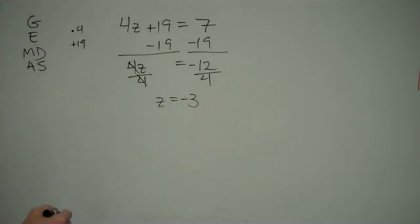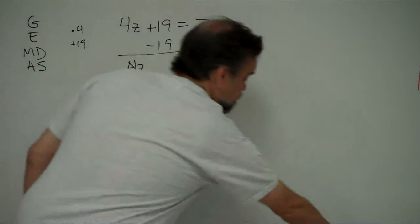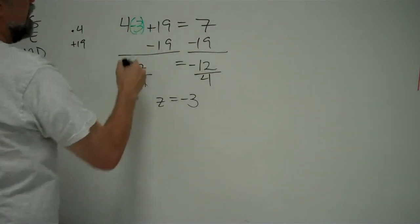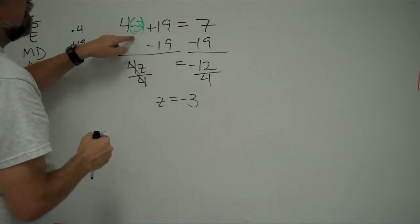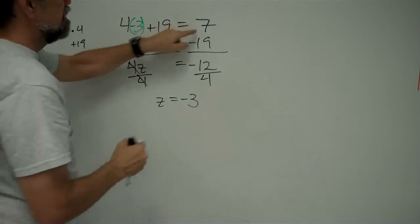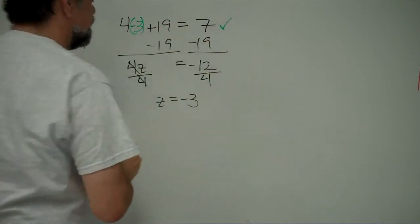Well, let's see. Is that really true? If I were to replace z with negative 3 here, I would get negative 12, and negative 12 plus 19 is like saying 19 minus 12, which is 7. Yes, that works.